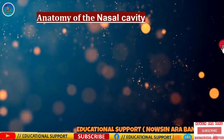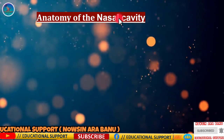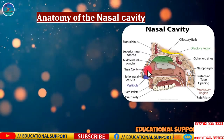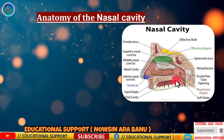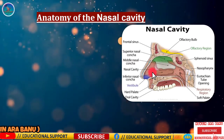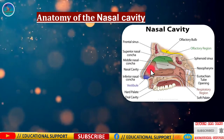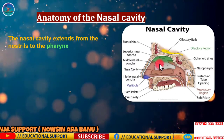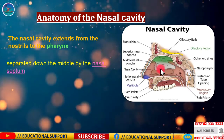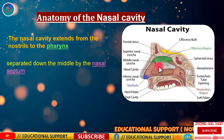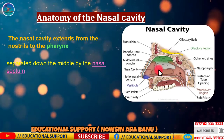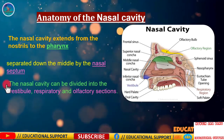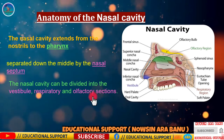The nasal cavity extends from the external opening — the nostril — to the nasopharynx, the upper section of the throat, where it joins the rest of the respiratory system. It is separated down the middle by the nasal septum, a piece of cartilage which divides the nostrils. Each nostril can be further divided into roof, floor, and walls. The nasal cavity can be divided into vestibule, respiratory, and olfactory sections.